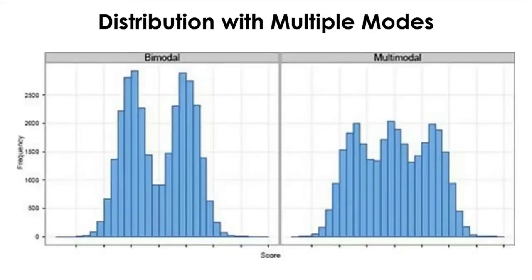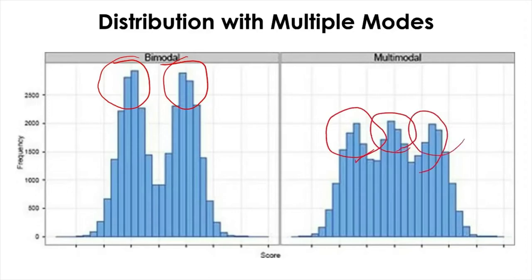The mode of the distribution is easy to locate from a histogram — you just need to find the highest point. Depending upon the number of peaks, a distribution can be bimodal, like the graph on the left, where you can see two obvious peaks. And if a distribution has more than two peaks — such as three modes — then we call it a multimodal distribution.